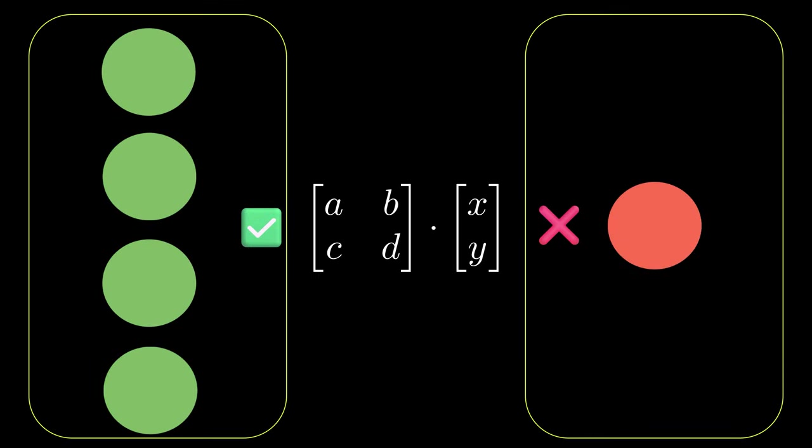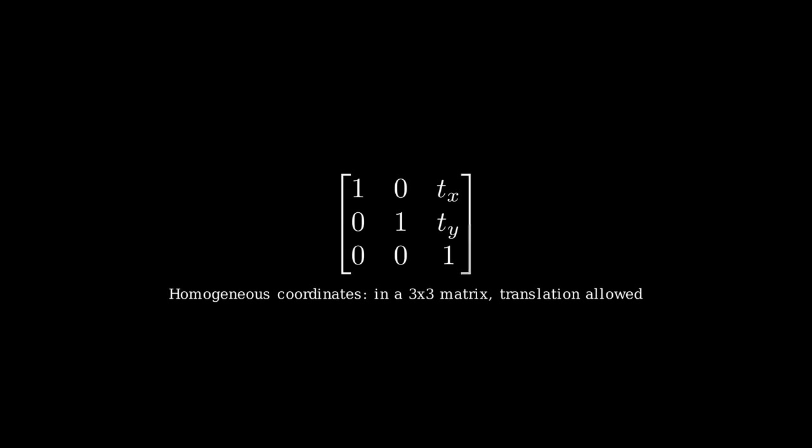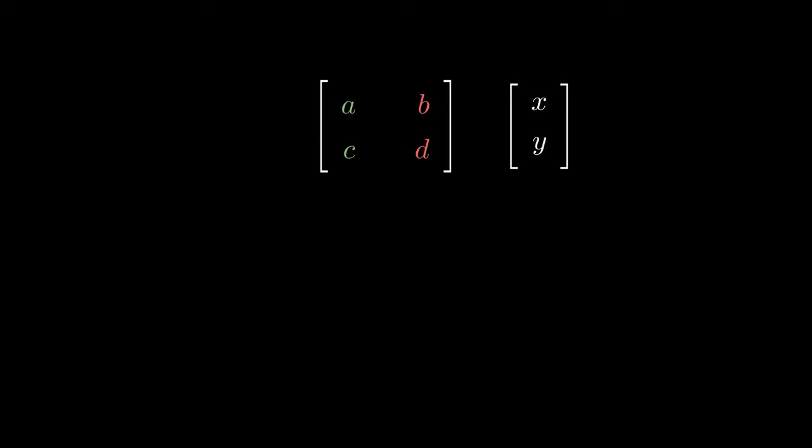And therefore, we cannot use a 2x2 matrix to illustrate it. The answer to this is homogeneous coordinates. Simply put, the object to be transformed bumps up to a 3 vector.